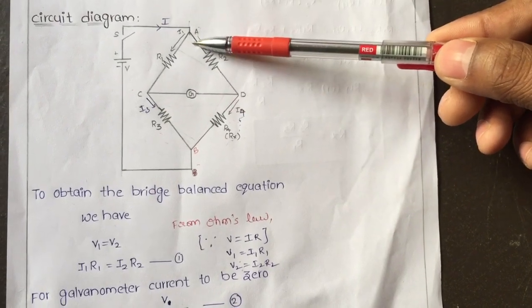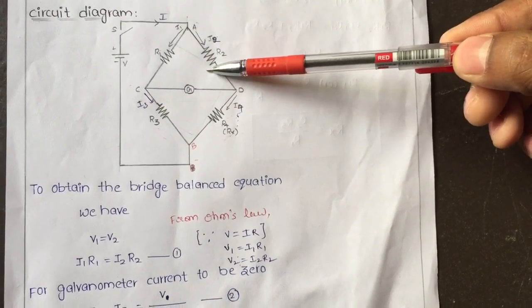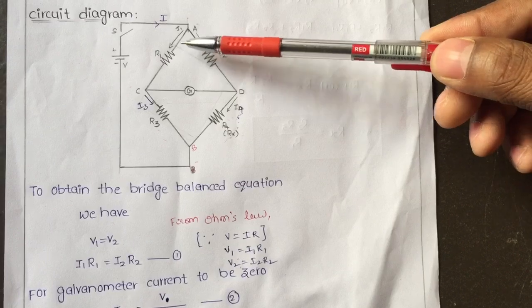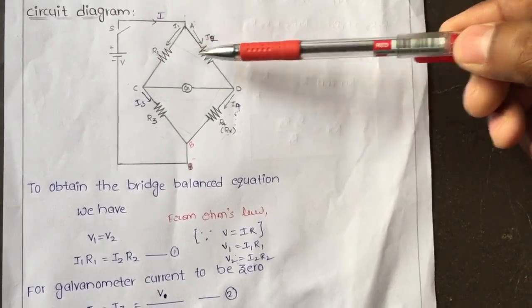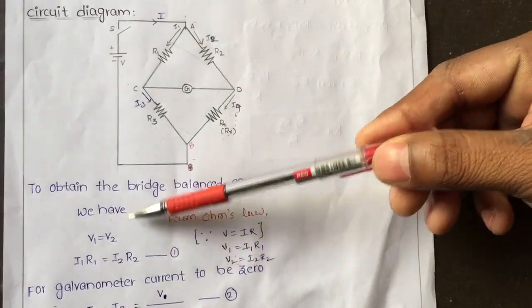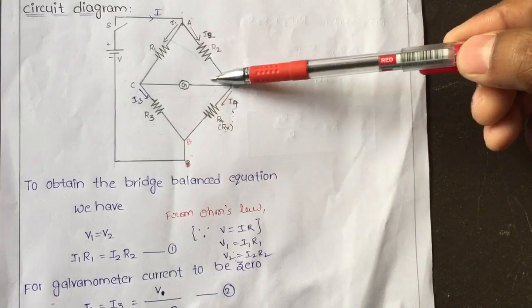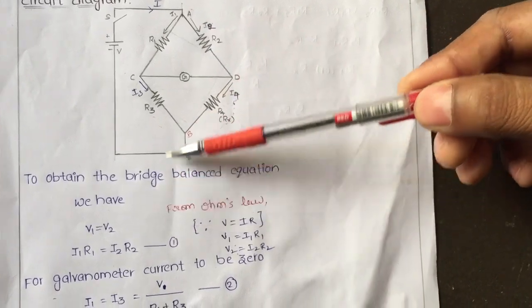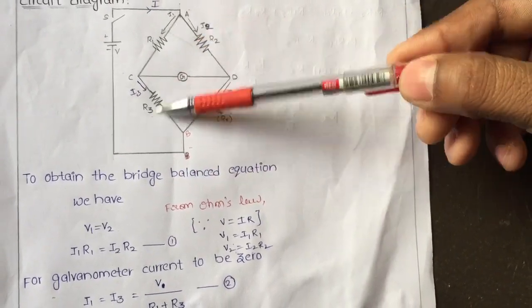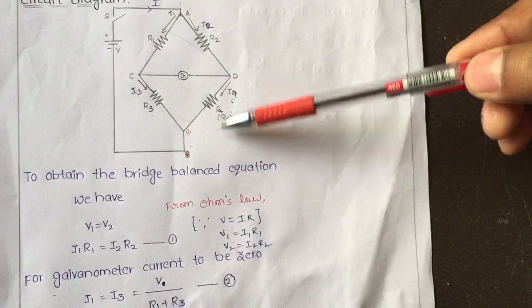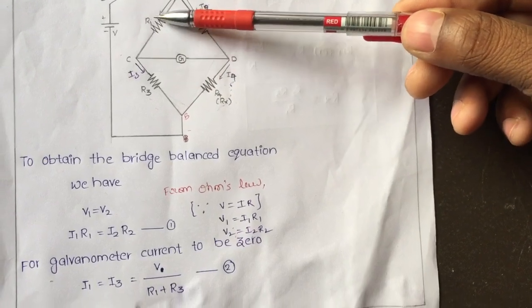When the resistors are in series the current through them is the same. So across R1 the current is I1 and across R3 the current is I3 — both are the same — so we can write I1 = I3.